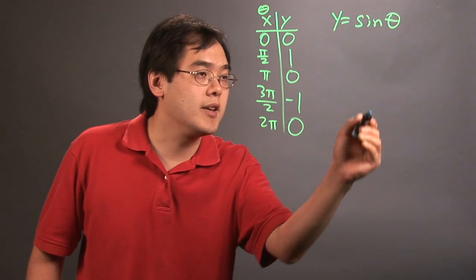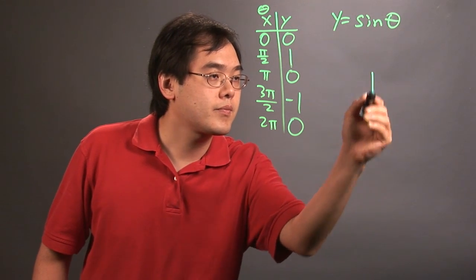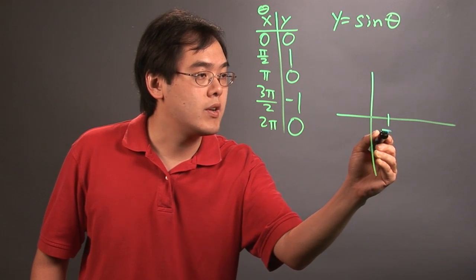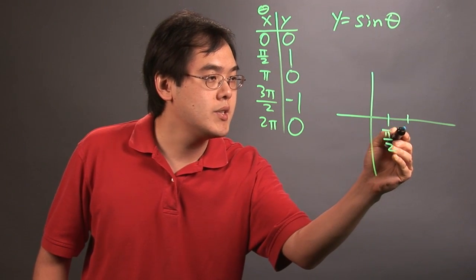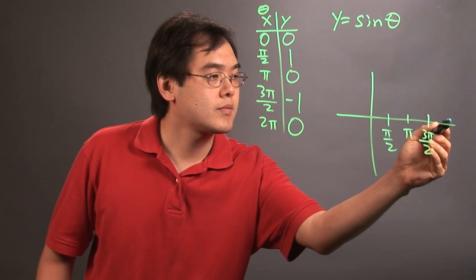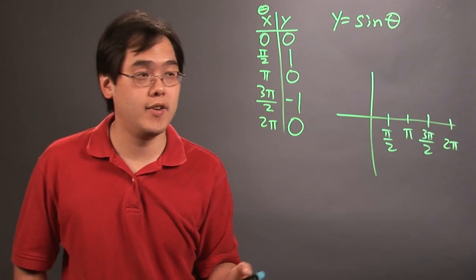Now, when it comes to graphing it, the idea works like this. What we're going to do is mark these, label these, and this gives you one cycle of the sine function.